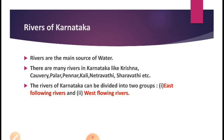Now let us begin with the introduction part. We know that there are a number of rivers in our state. Among them, river Krishna, Kaveri, Palar, Pennar, Kali river, Netravati, and Sharavati are the major rivers of the state. Rivers are the main source of water because people depend on river water for different purposes — mainly for agriculture, daily routine purposes, and hydroelectric power generation using flowing river water or waterfalls.